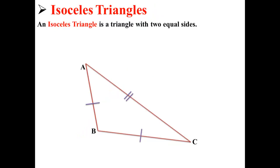Here we have an isosceles triangle. An isosceles triangle is a triangle with two equal sides. So here AB and BC are equal, while AC is longer than the other two.